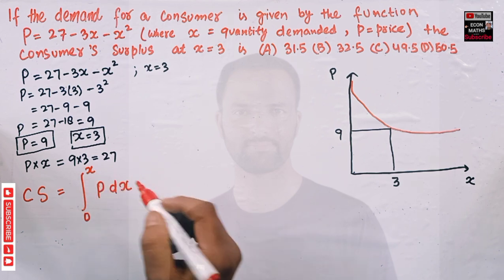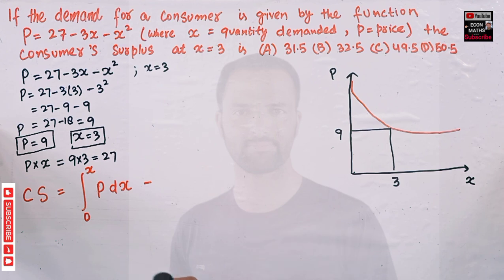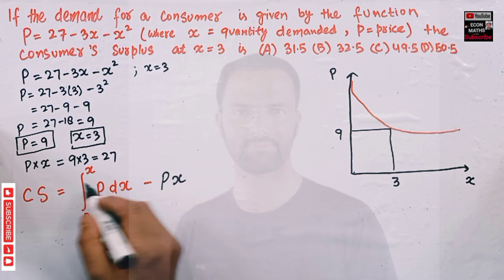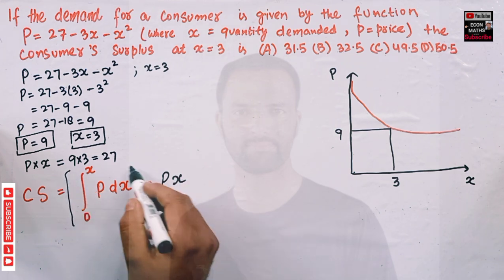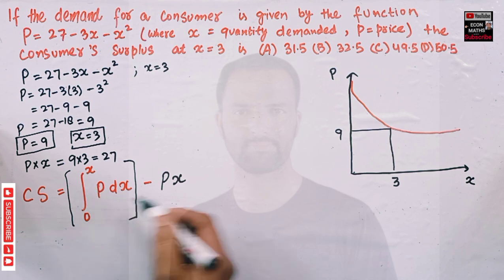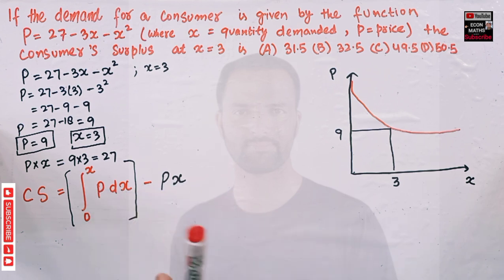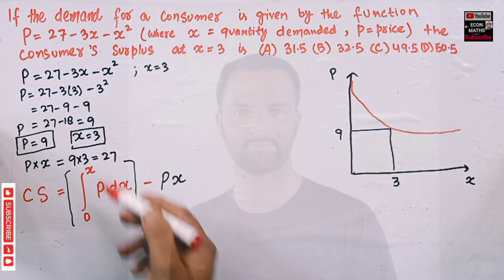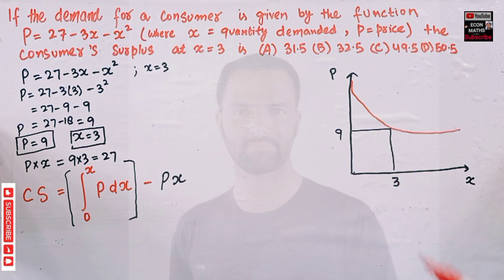From that integral we subtract the total expenditure, that is price times quantity. This total expenditure term is outside the integral — not to be confused with being inside the integral part.